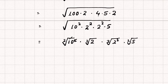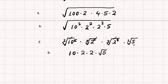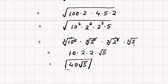The square roots cancel with the squares: 10, then 2, then 2 again. Only √5 remains without a perfect square. So the answer is 10 × 2 × 2 × √5 = 40√5. Like and subscribe — thanks for watching!